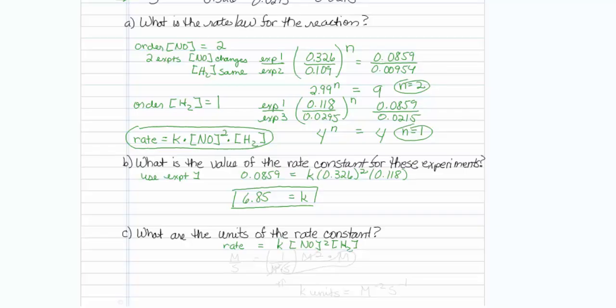A rate is always in units of molar per second. NO is in units of molar, and that's squared. H2 is in units of molar to the first power. So what we're really being asked is, what goes here?